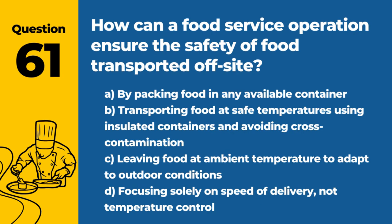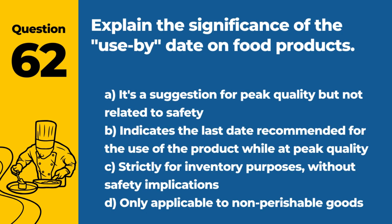Question 61. How can a food service operation ensure the safety of food transported off-site? The answer is B: Transporting food at safe temperatures using insulated containers and avoiding cross-contamination ensures food remains safe during transport.